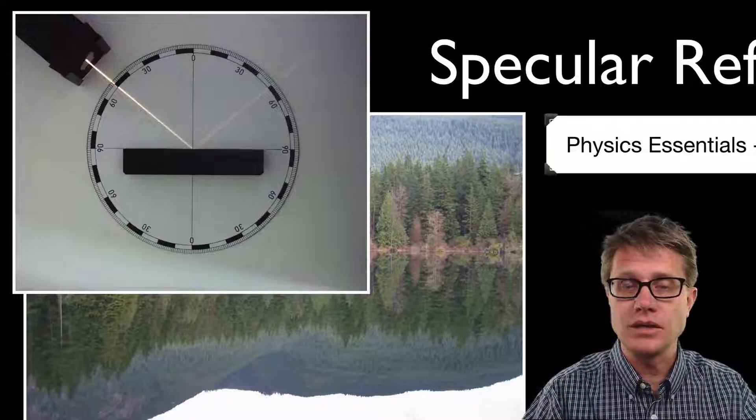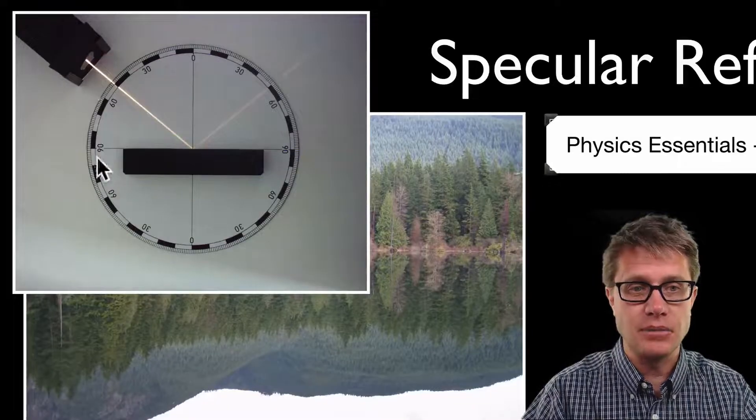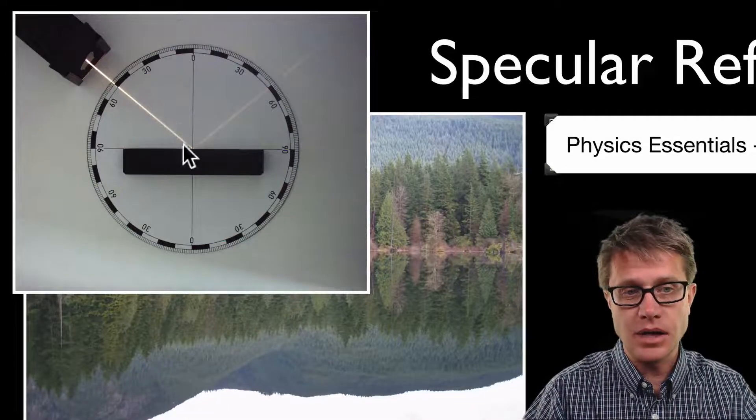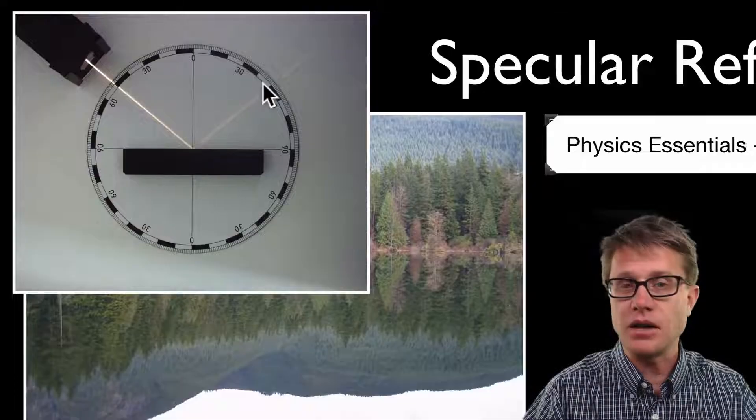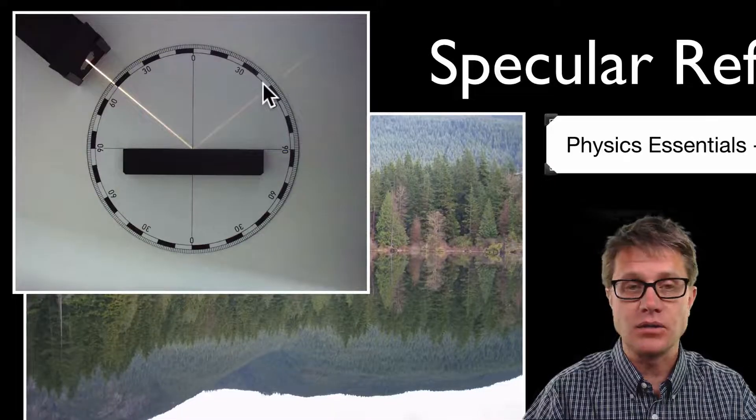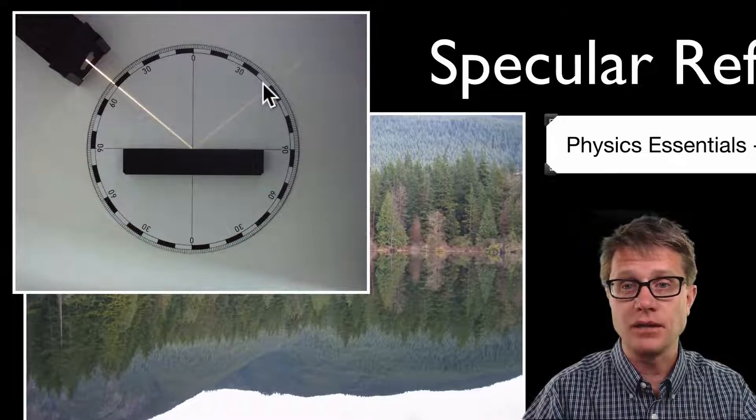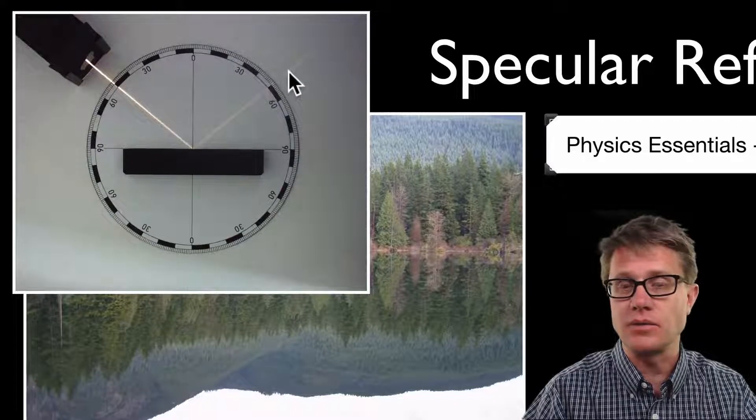And so if we look at that in more detail, if we shine a laser light on a mirror, it is going to come in at an angle, bounce off that surface, and be reflected. We call that specular reflection because it is all going in the same direction.